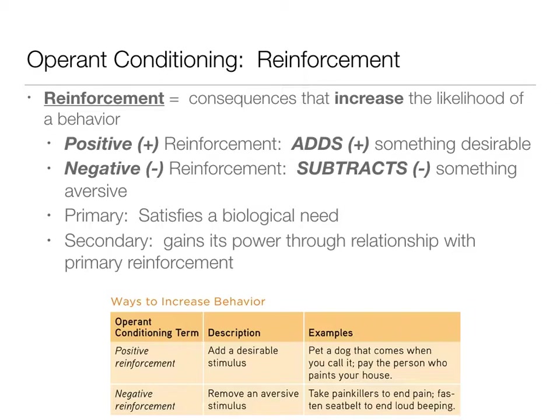Positive reinforcement is adding a desirable stimulus — like calling your dog and petting it, which positively reinforces the dog coming to you. Negative reinforcement involves removing something adverse — like taking a painkiller removes pain, or fastening your seatbelt removes that adverse beeping sound. After removing that aversive thing, you feel better, and so the behavior is more likely to happen again.